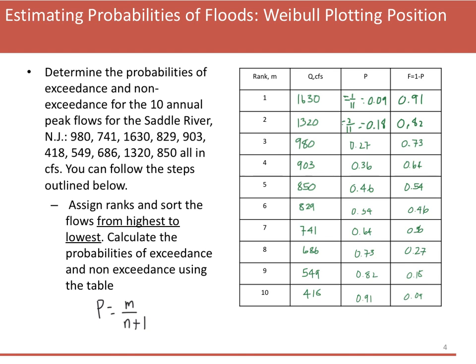Let's clarify the difference between P, the probability of exceedance, and F, the probability of non-exceedance. For 1630 CFS, the probability of exceedance is the probability that we see at least 1630 — that flow or more. The higher the flow, the less likely you are to experience it, so there's only a 9% chance of hitting that flow or greater, and a 91% chance of getting less than or equal to it. For the lowest flow, 418 CFS, you have a 91% chance of seeing at least that much flow, and only a 9% chance of seeing less.